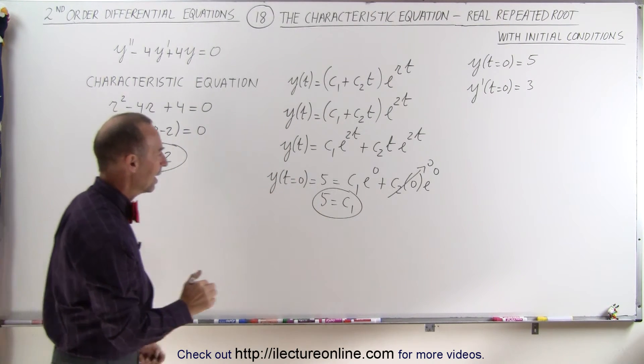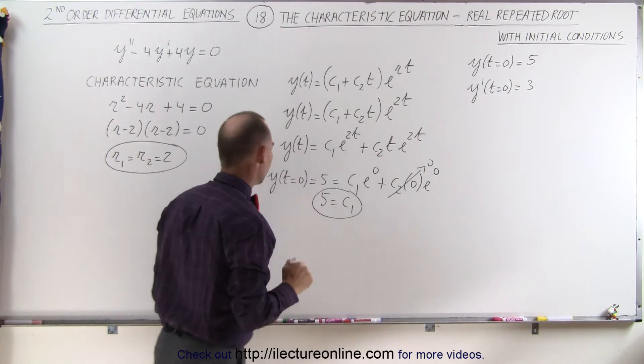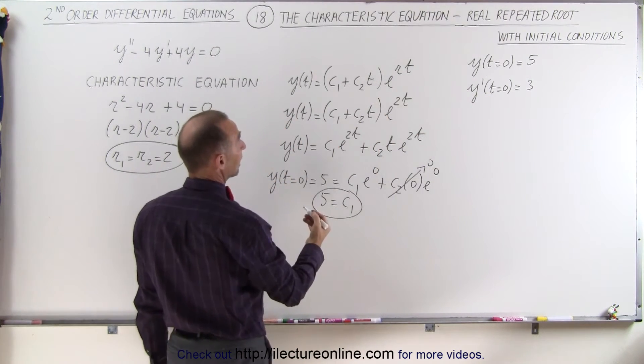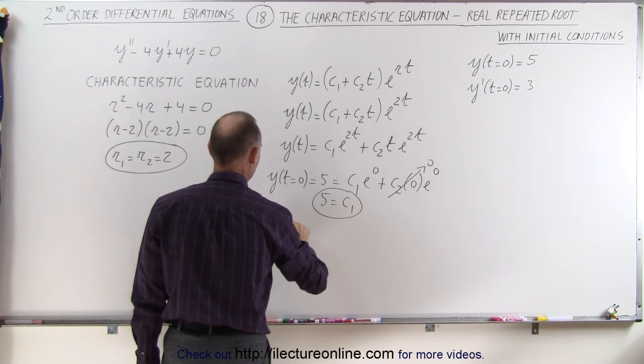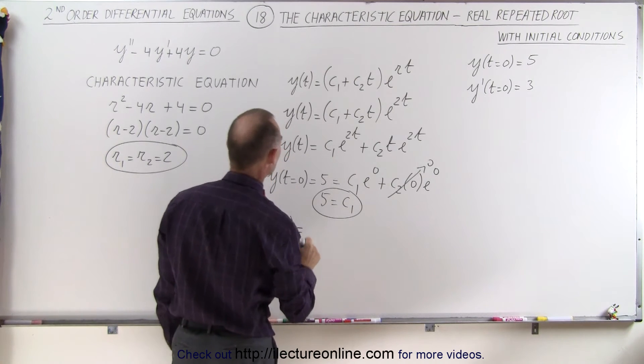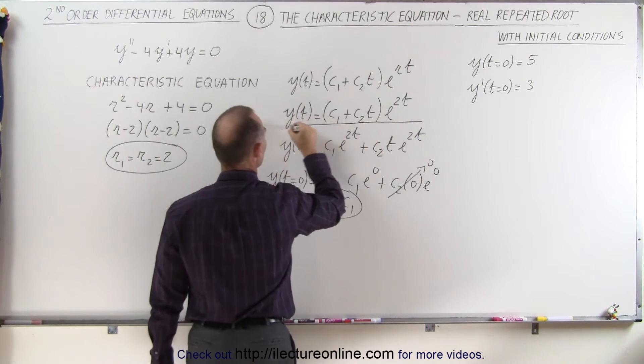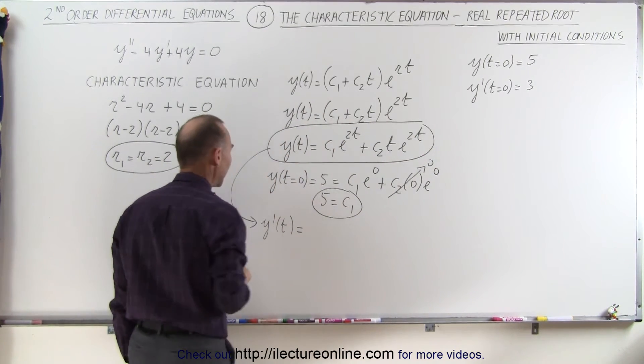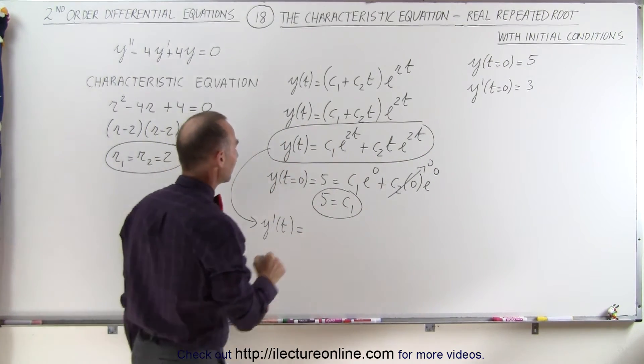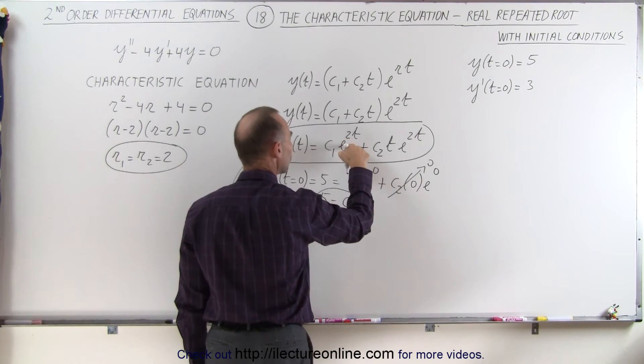Now let's go ahead and use the second initial condition to find c2. So that means we first need to get y prime, and y prime of t is going to be equal to... So starting with our equation right here, we're going to find the first derivative of that. And that means here we have c1 e to the 2t. Take the derivative of this.